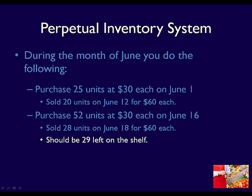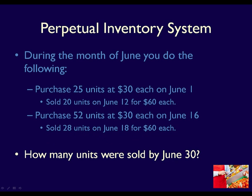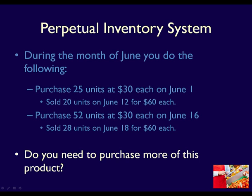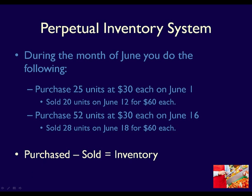We already have more information than we did under the periodic inventory system. If the business needs to know how many units were sold by June 30th, they can calculate that a total of 48 units have been sold — meaning the business always knows how many units they have sold during a period. They also know how many units are presently in inventory: inventory purchases less inventory sold equals the inventory that should be on the shelf.